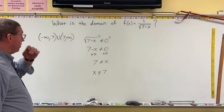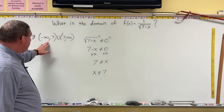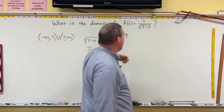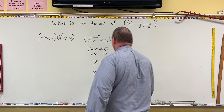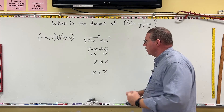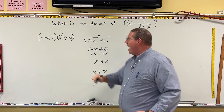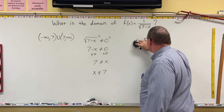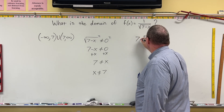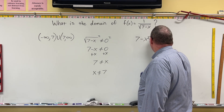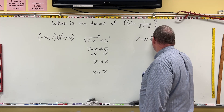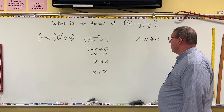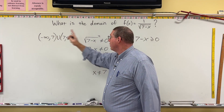What we would write is negative infinity up to 7, union 7 up to infinity. But the problem is that some of these values in this domain might violate the square root. So in addition to the rational domain, we're also going to find the domain of the square root. We know that as a square root, 7 minus x has to be greater than or equal to zero — it cannot be a negative number.